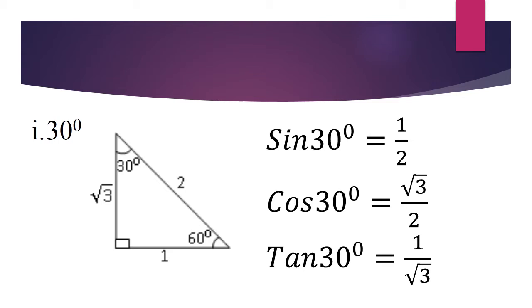Sin 30 is 1 over 2, cos 30 is root 3 over 2, tan 30 is 1 over root 3.